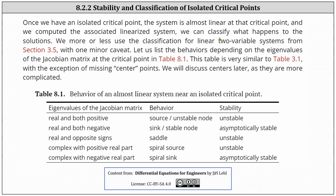Once we have an isolated critical point, the system is almost linear at that critical point, and we have computed the associated linearized system, we can classify what happens to these solutions. We more or less use the classification for linear two-variable systems from section 3.5 with one minor caveat. We list the behaviors depending on the eigenvalues of the Jacobian matrix at the critical point in table 8.1. This table is very similar to table 3.1 from chapter 3, with the exception of missing center points. We will discuss center points later as they are more complicated.